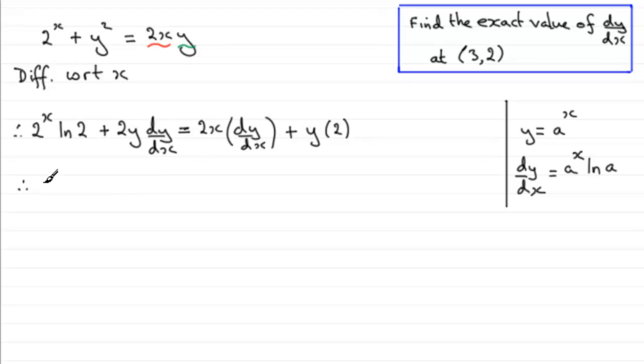So if we do that, we're going to end up with 2 to the power x natural log of 2 minus this 2y is going to equal 2x dy/dx minus 2y dy/dx.